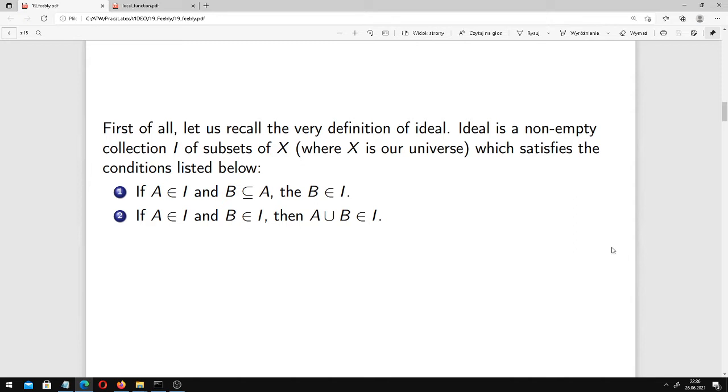First of all, let us recall the very definition of ideal. Ideal is a non-empty collection I of subsets of X, where X is our initial universe, which satisfies the following conditions.